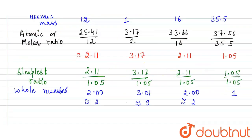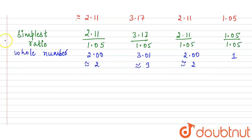Now we can write the empirical formula. The empirical formula is equal to C2H3O2Cl.